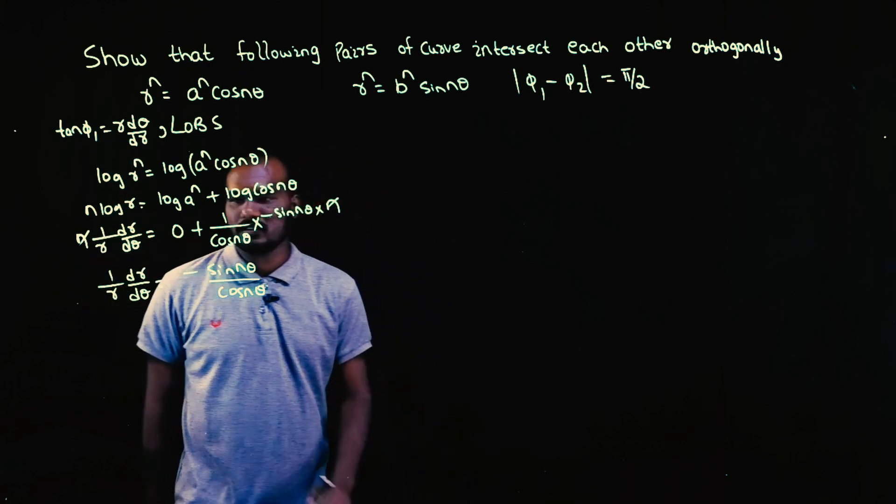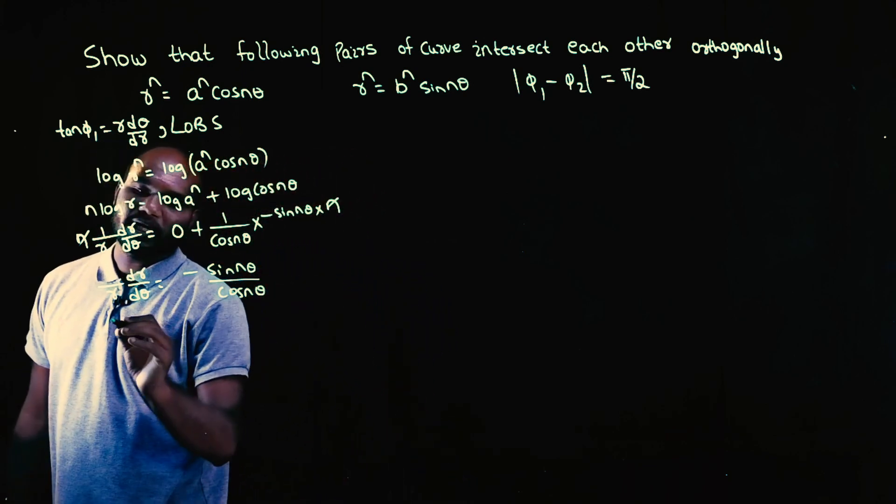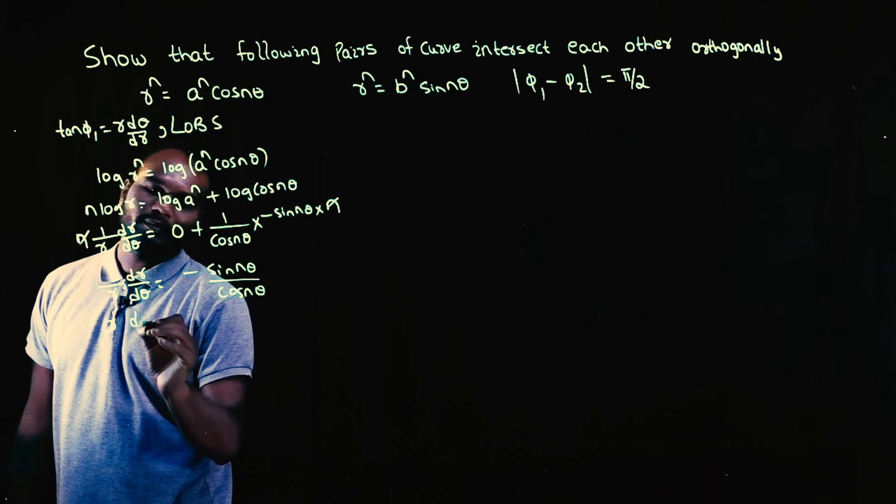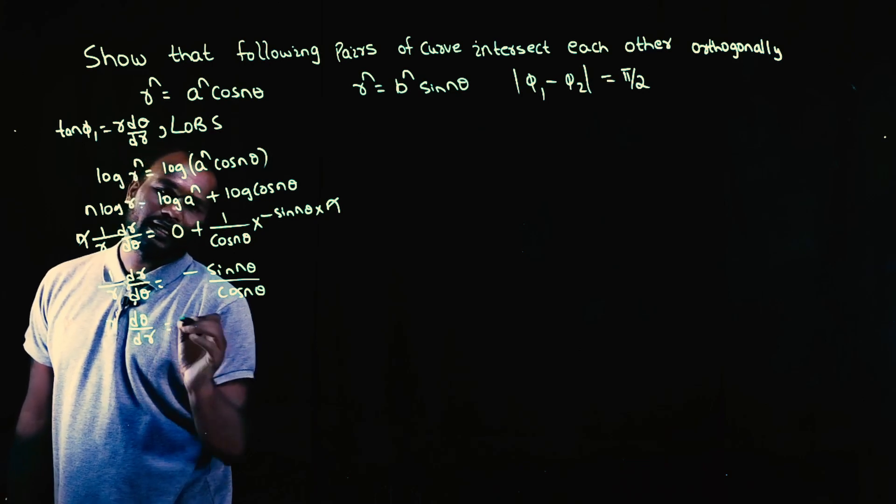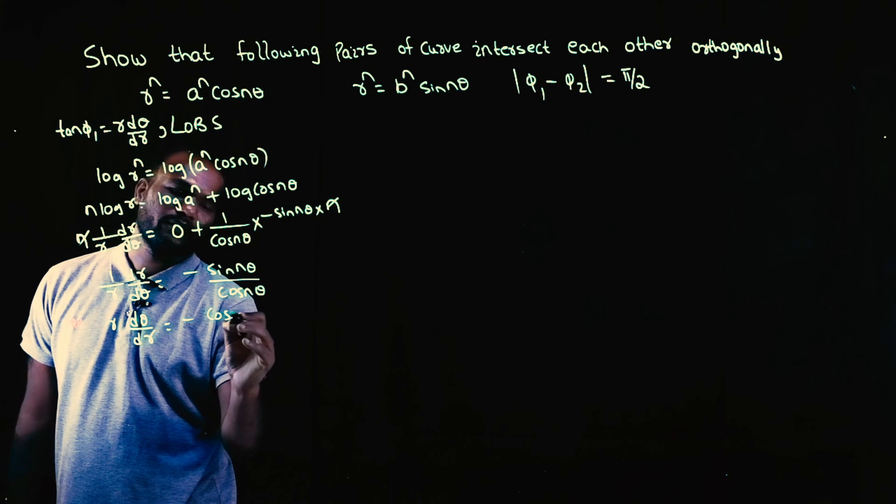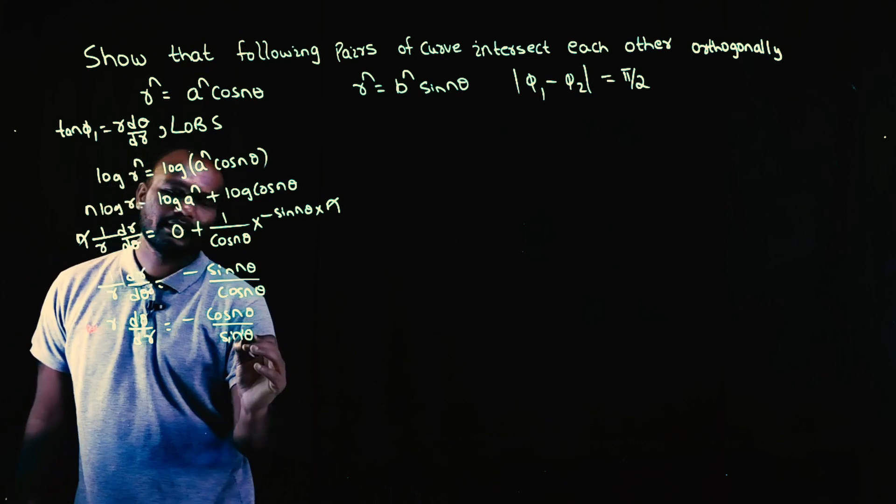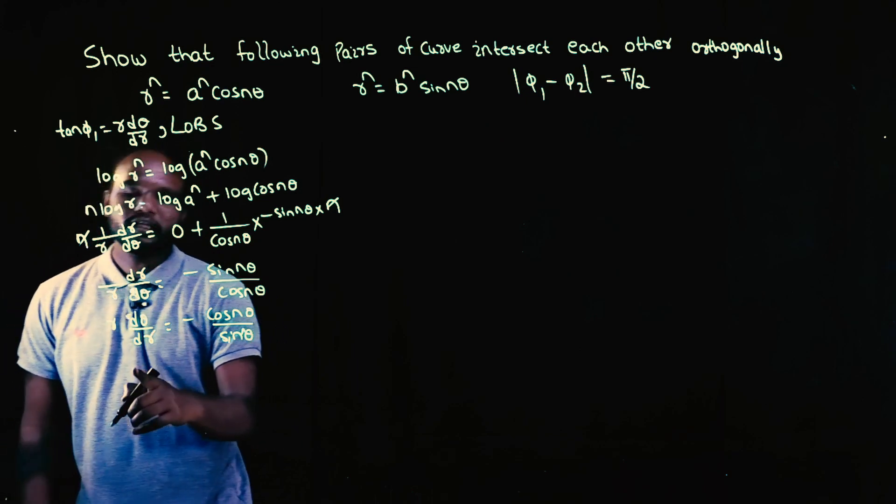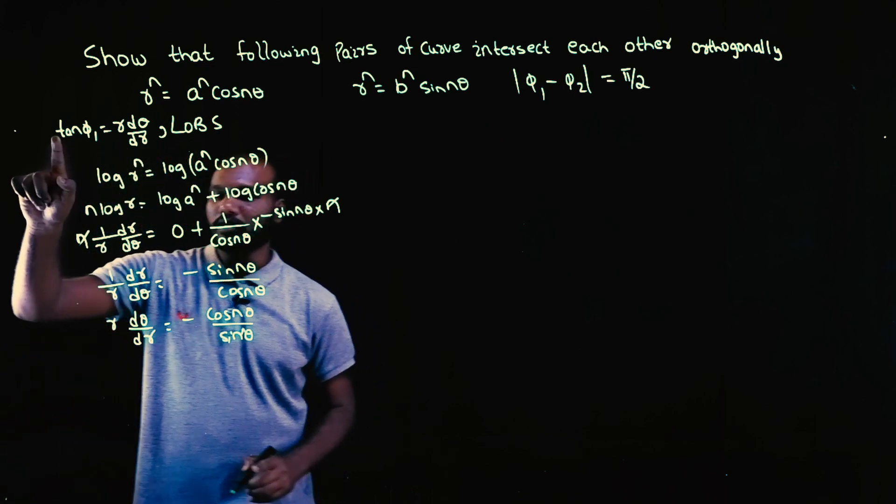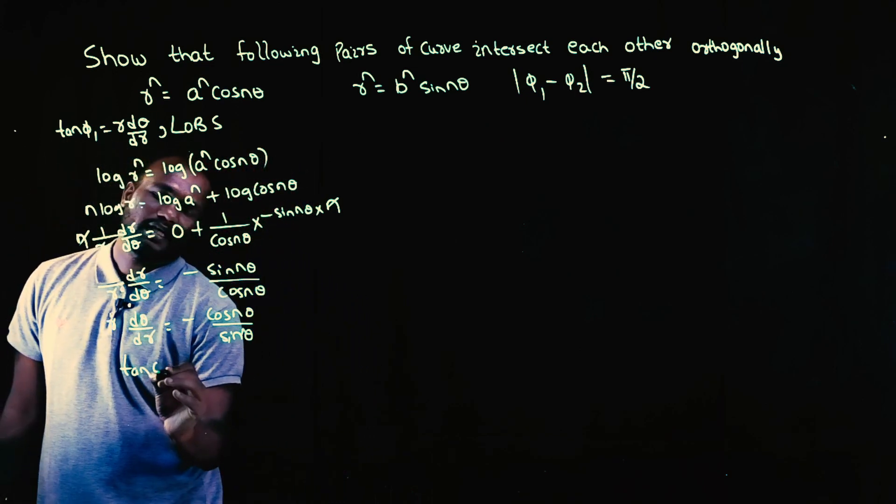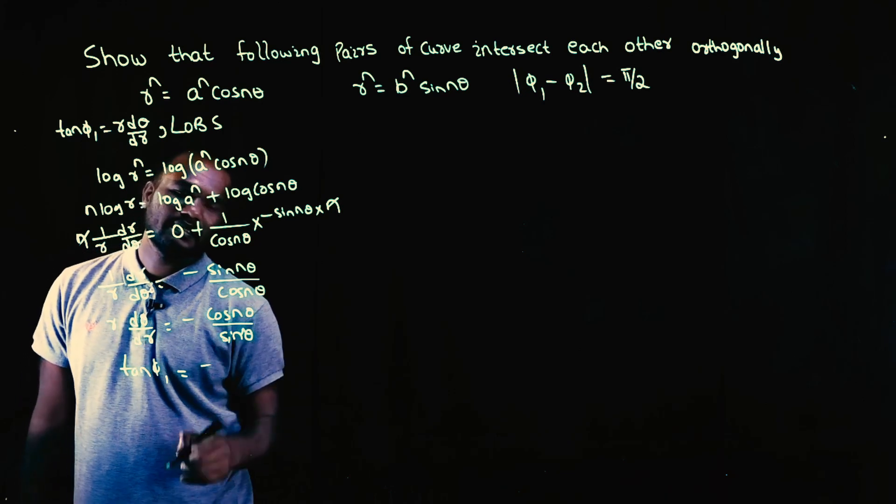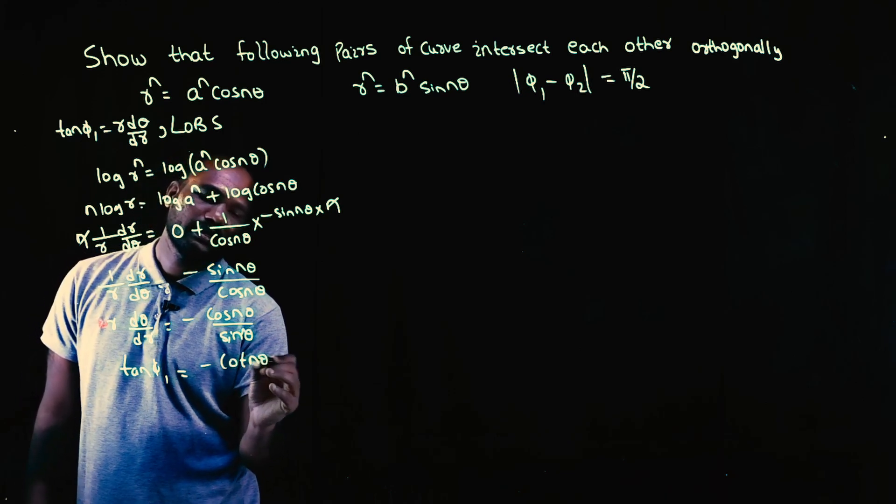I don't want 1 by r, I want r in the numerator. I'll just flip this one. So 1 by r will become r, dr by d theta will become d theta by dr. So cos will go up, sine will come down. So now r into d theta by dr is tan phi 1. So tan phi 1 is equal to minus cot n theta.